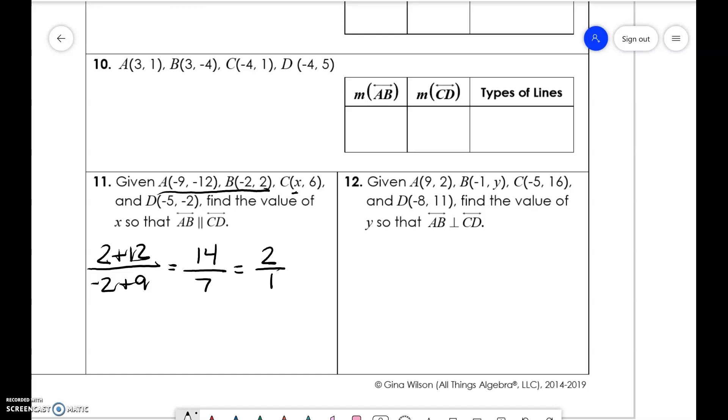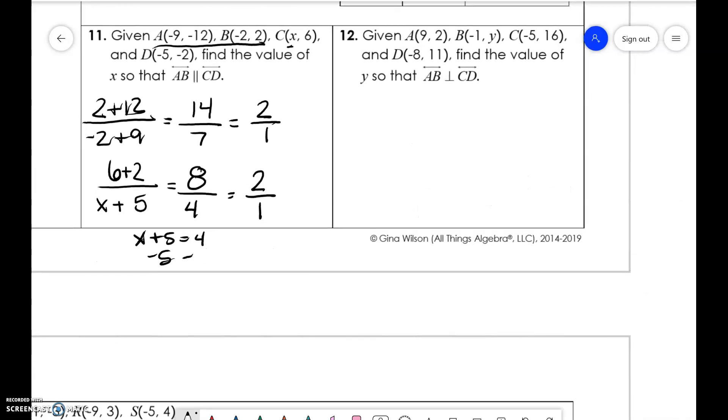Now if we set up our slope for CD, we have 6 plus 2 over x plus 5. So 6 plus 2 is 8, and we need something over 8 so that this reduces to 2 over 1. So 8 divided by what is 2, that's 4, so we want x plus 5 to equal 4. If we subtract 5, x equals negative 1.